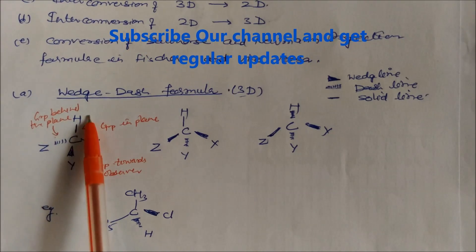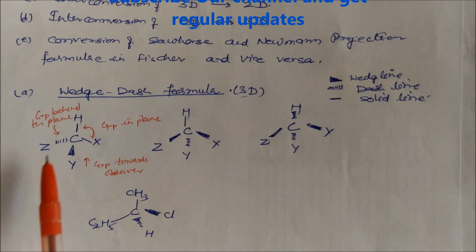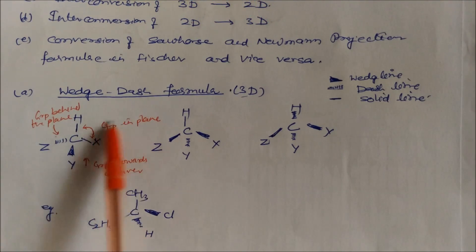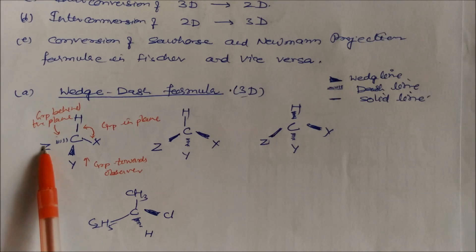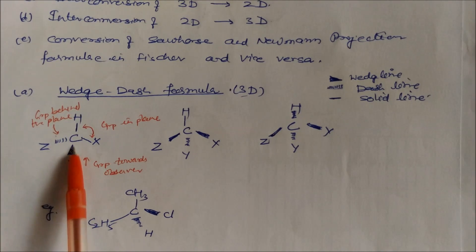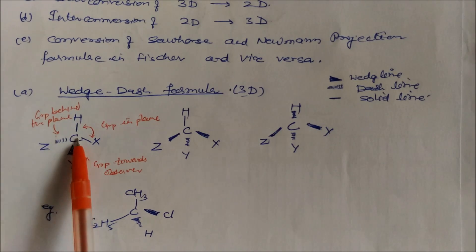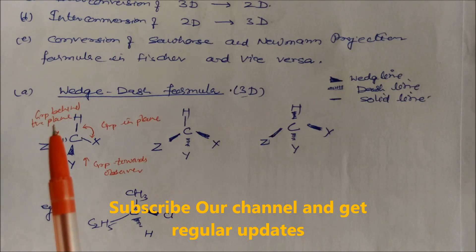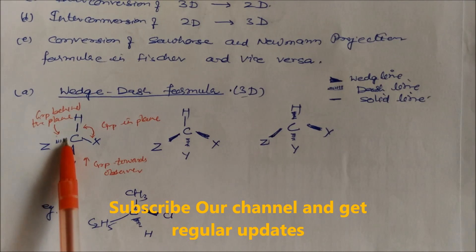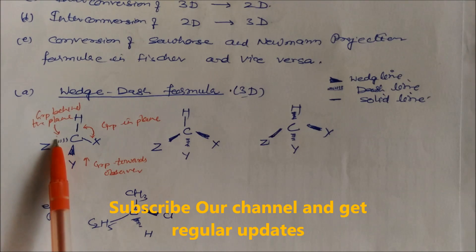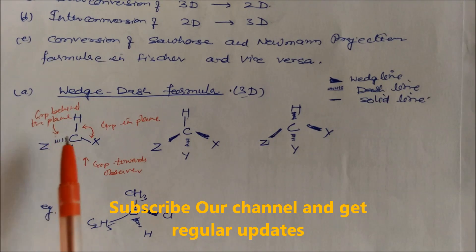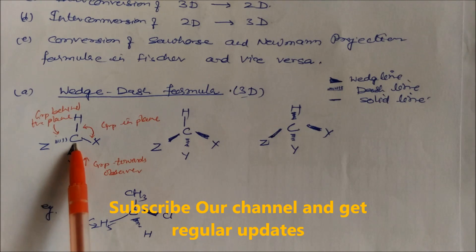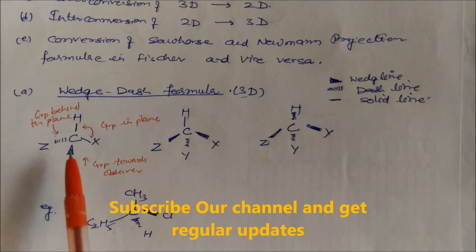In a molecule with a central carbon and four groups X, Y, Z, and H: two groups are in the plane of the paper. The dash indicates Z is behind the plane — away from the observer — so the line broadens at the back and narrows coming forward. Y is above the carbon, toward the observer, so the wedge broadens as it comes toward the observer.